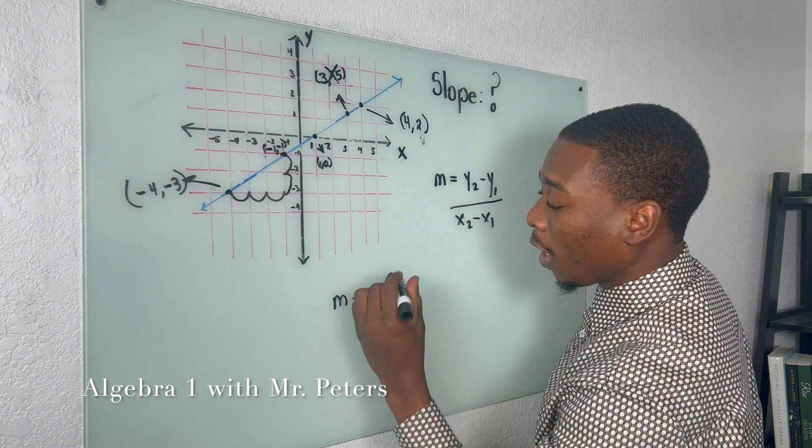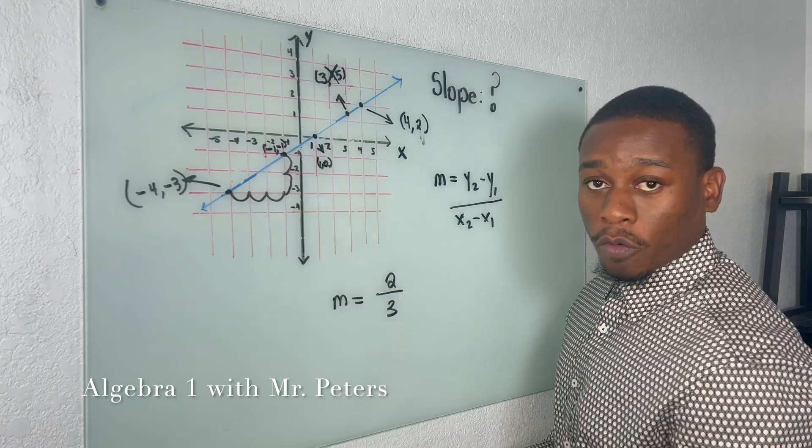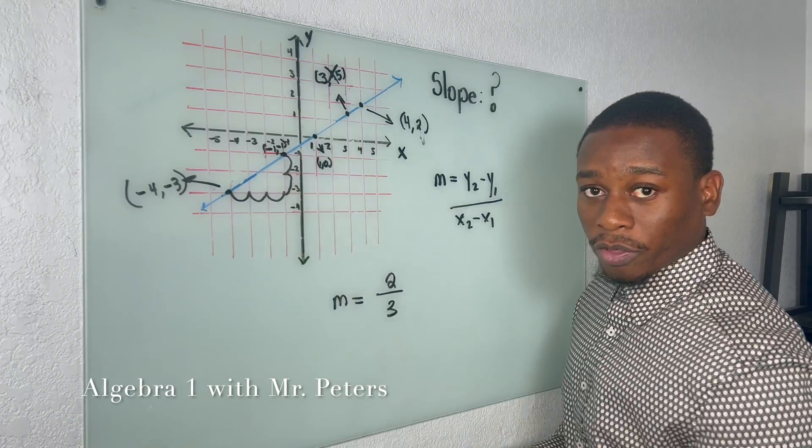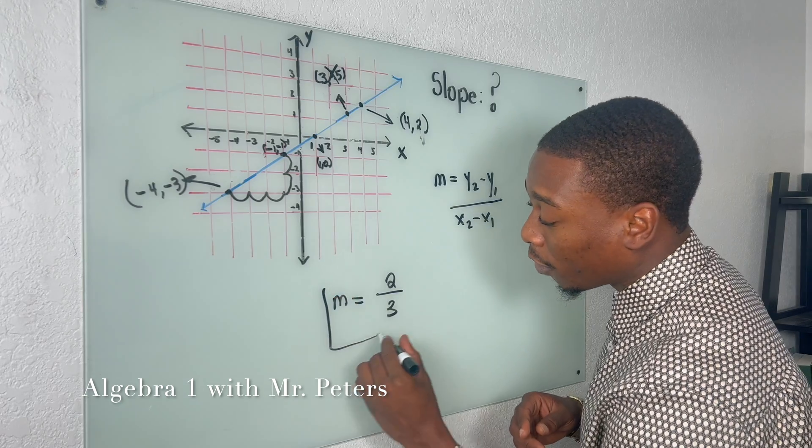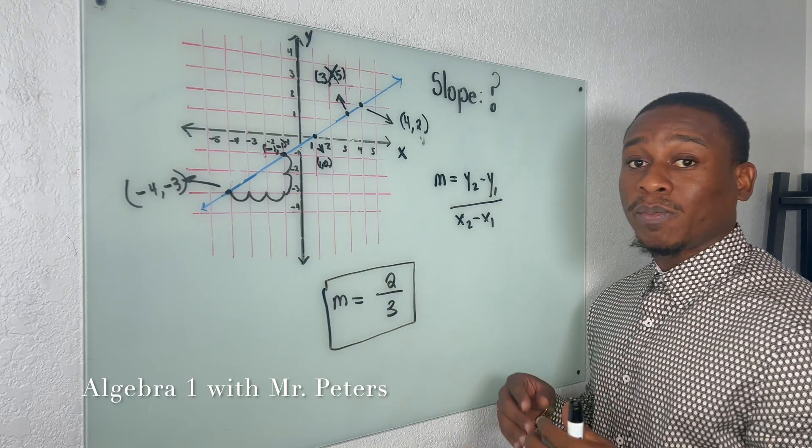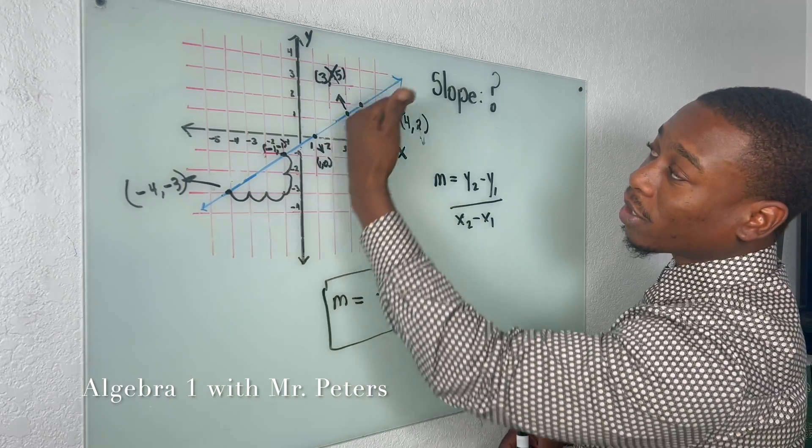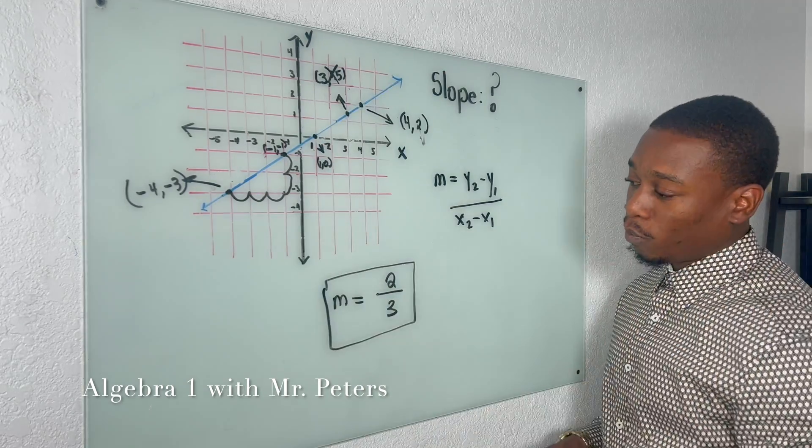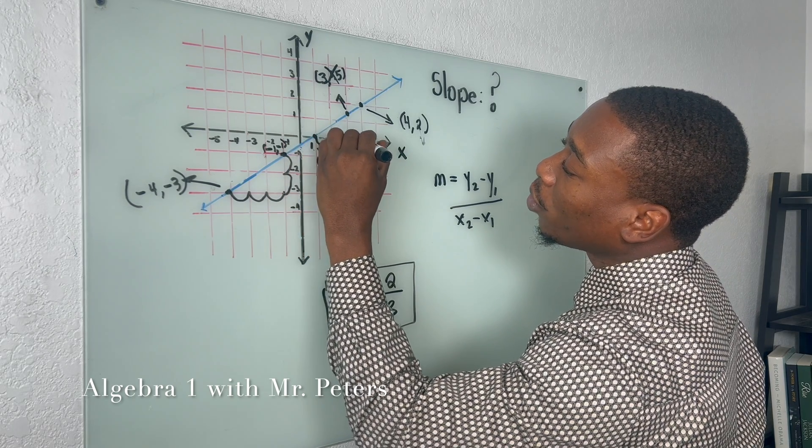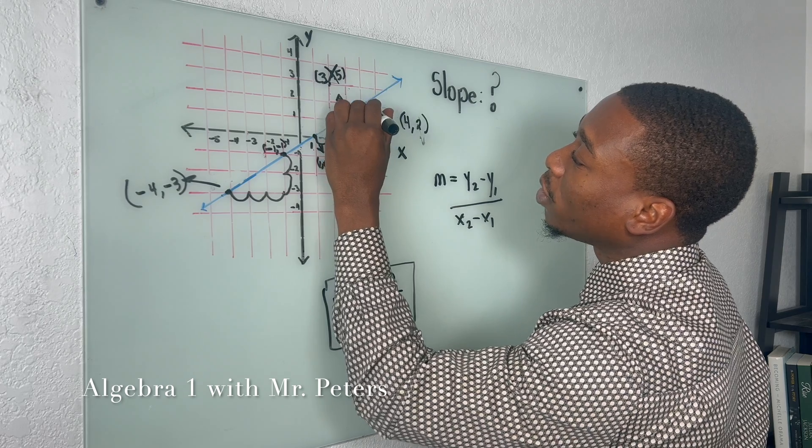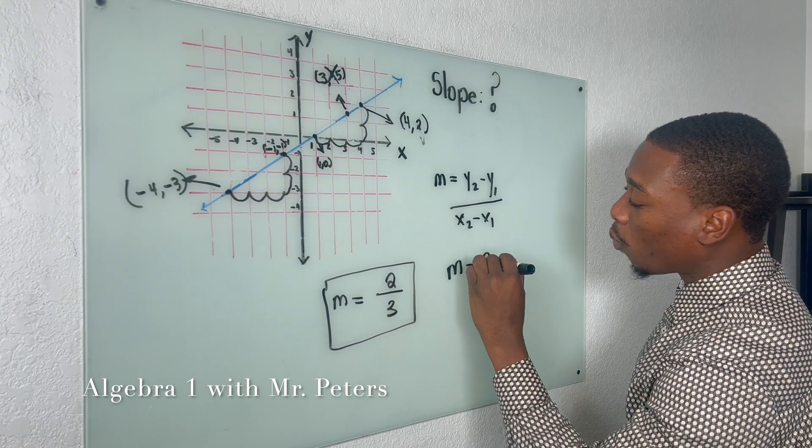And guys, just understand that whether we count down two over three or up two over three, that does not determine whether the slope is positive or negative. What determines the slope being positive is if the line is on an incline. So this is a positive slope because it's slanting upwards.